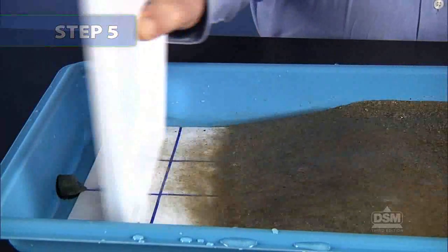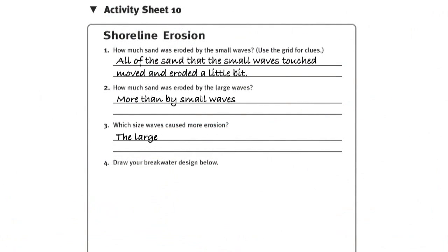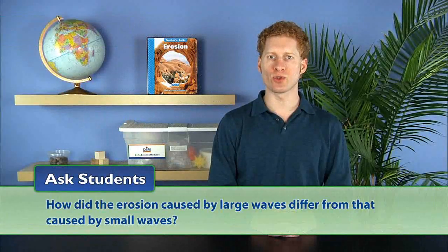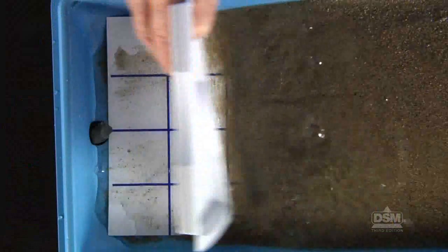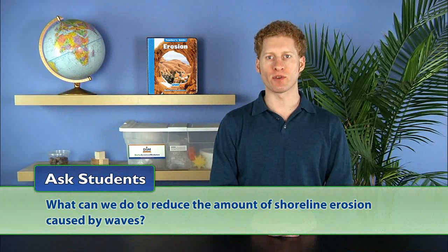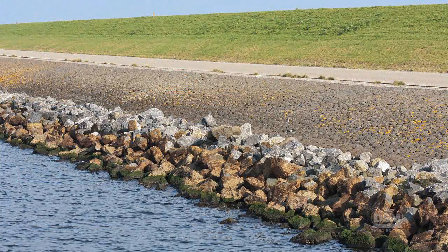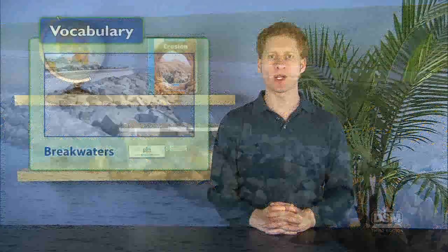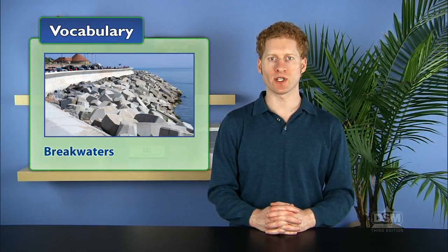Next, have students repeat the wave action, this time increasing the size of the waves, and then answer questions 2 and 3 on the Activity Sheet. Ask students how the erosion caused by large waves differed from that caused by small waves. Students should observe that large waves cause more erosion because they have more volume and more force. Then ask what can be done to reduce the amount of shoreline erosion caused by waves. If possible, show photographs of different types of breakwaters. Explain that breakwaters are artificial barriers positioned offshore to deflect or reduce the energy of waves as they approach the shoreline, thereby limiting shoreline erosion.